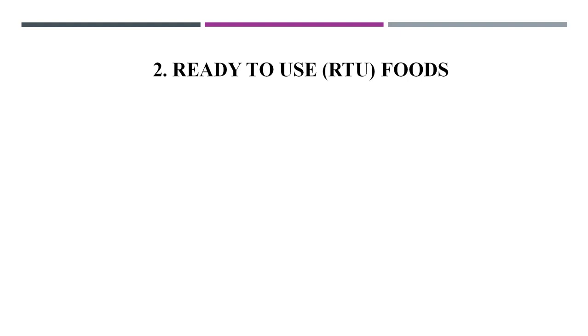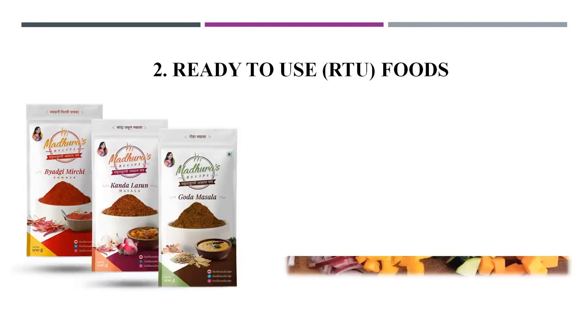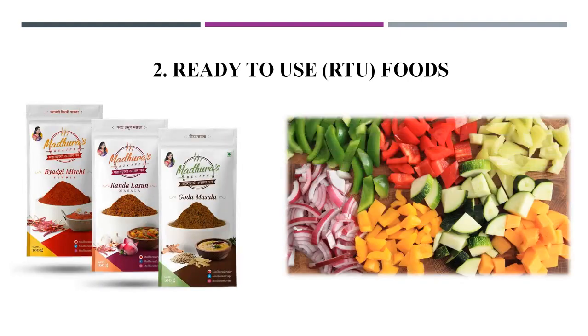Ready-to-use foods are foods which need some preparation like cooking, frying, or reconstitution before consumption. Masalas and fresh cut vegetables are examples of ready-to-use foods.